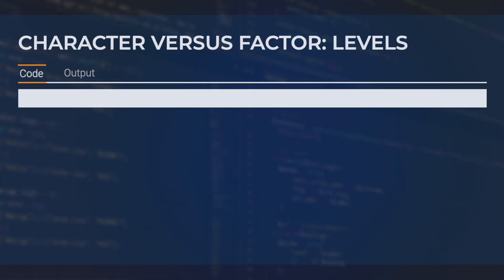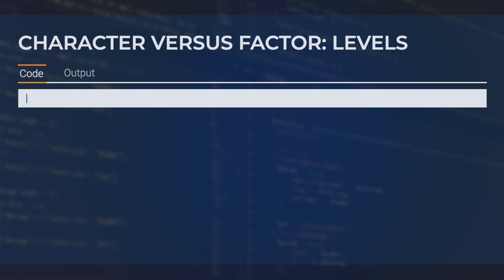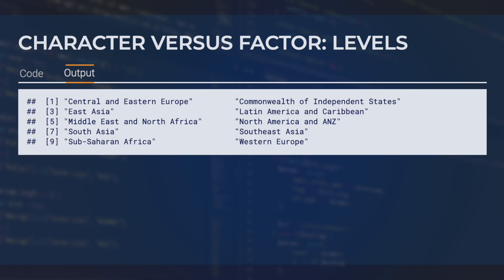Levels refer to all of the unique values a given factor variable can take. To see these values, you can simply use the levels function like this. When we apply this to the region variable in happyFull, we see that the output is null — that's because this is a character variable and so it doesn't have any levels. However, when we apply this function to the region variable of happyFact, we see that we now get all the region names in this data frame.